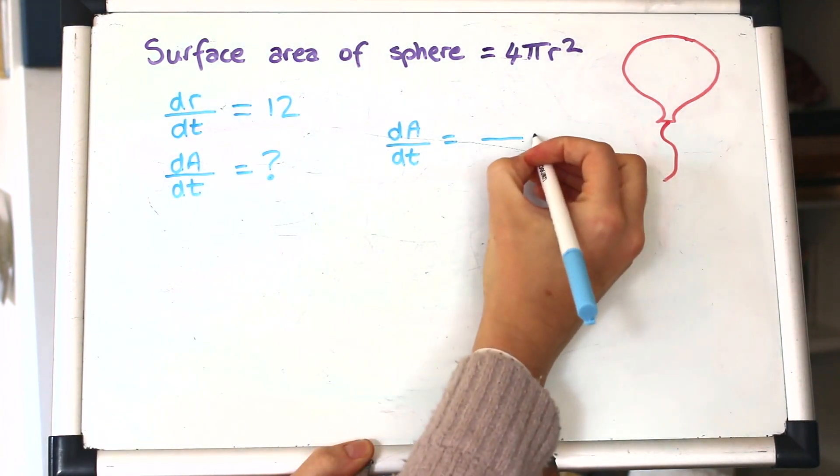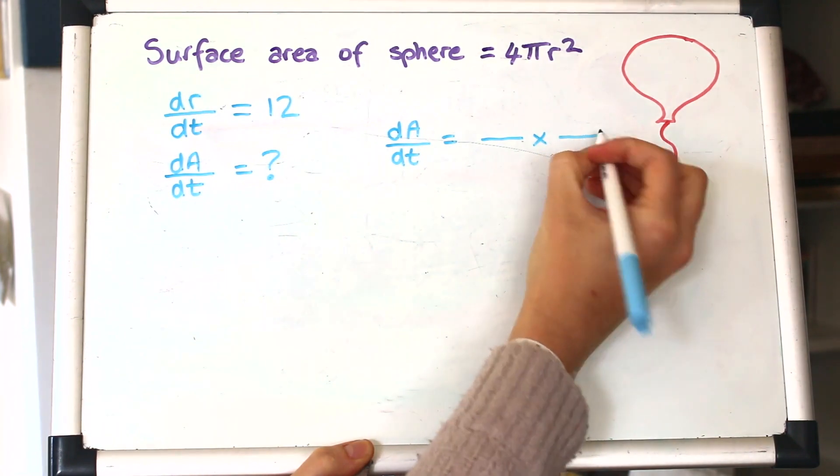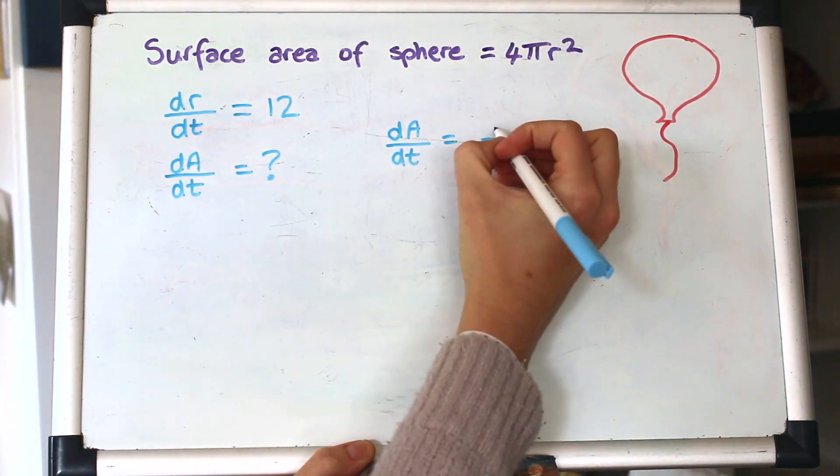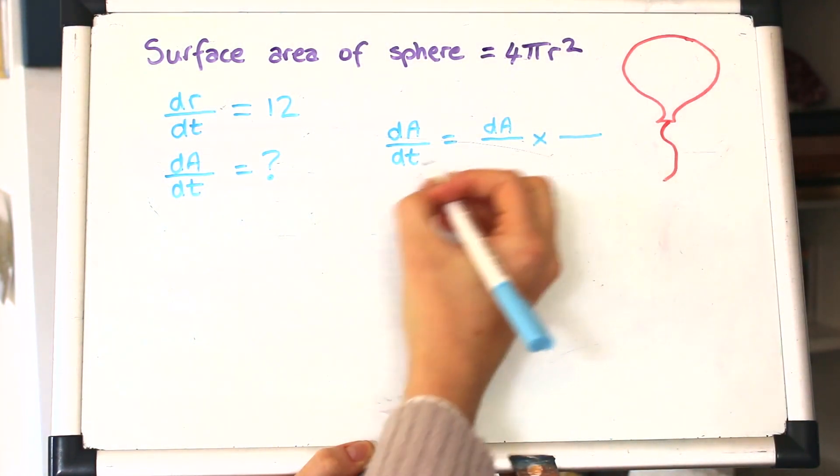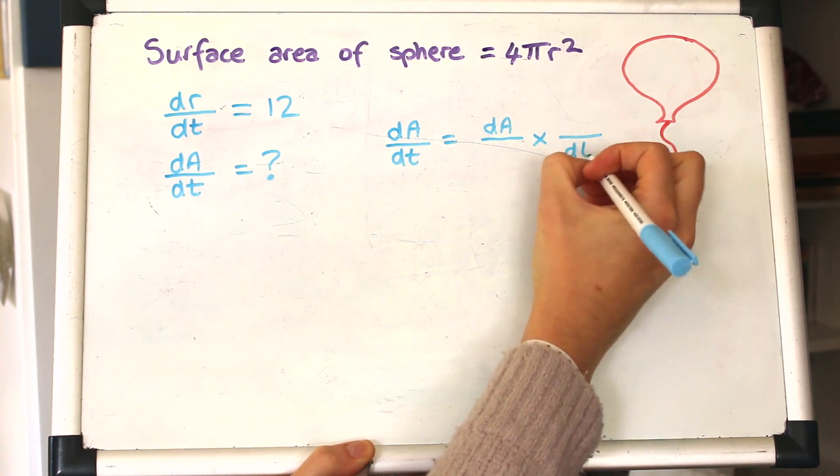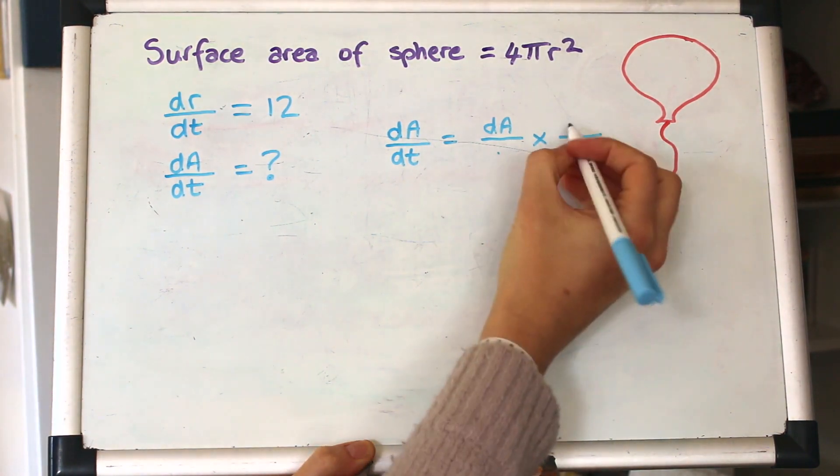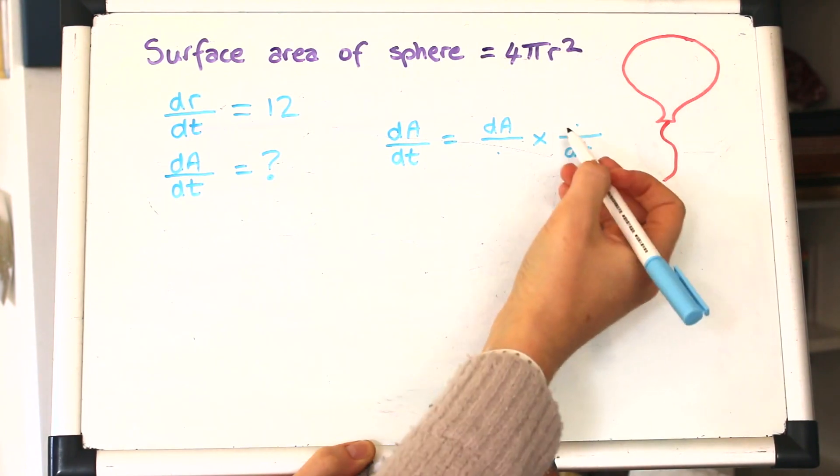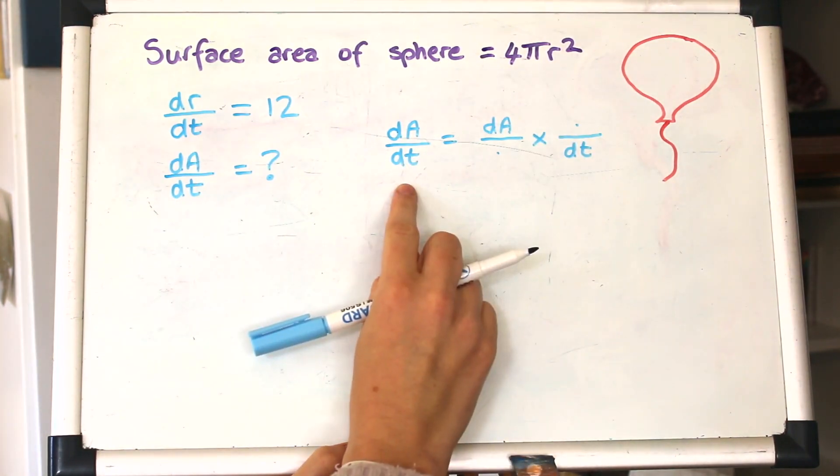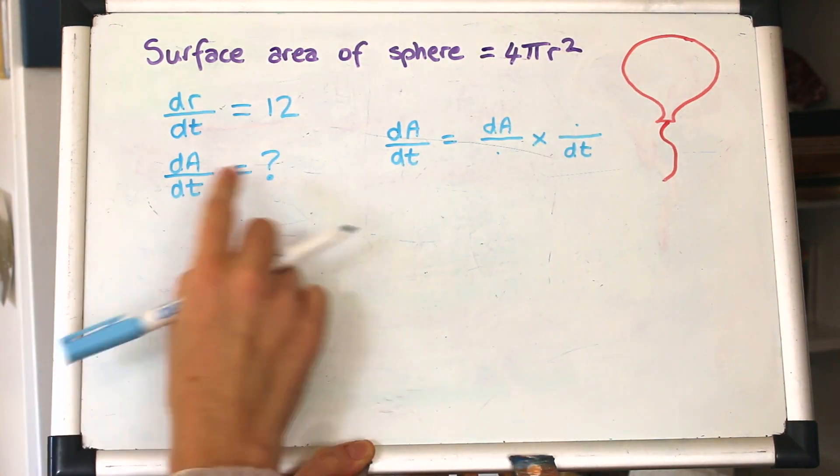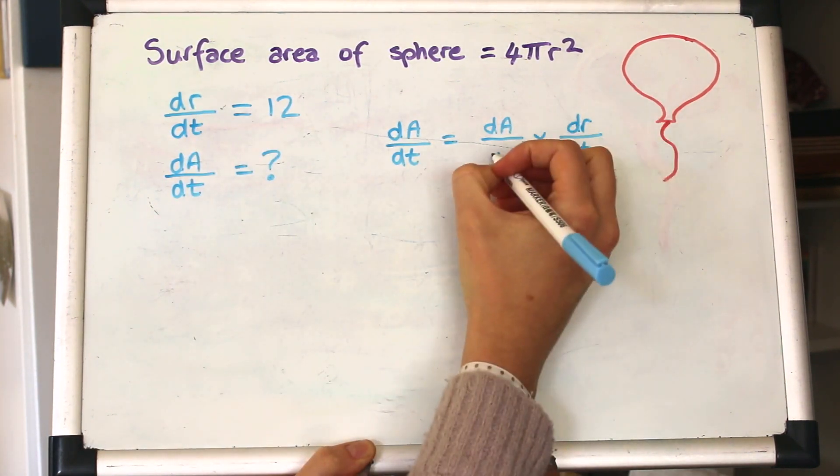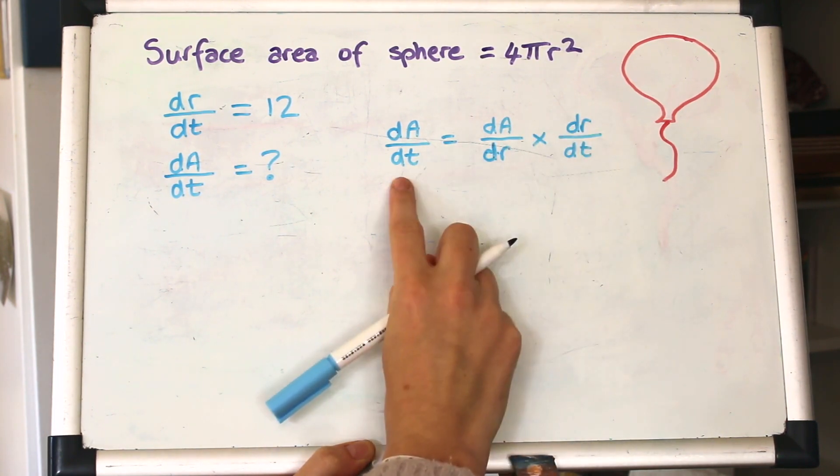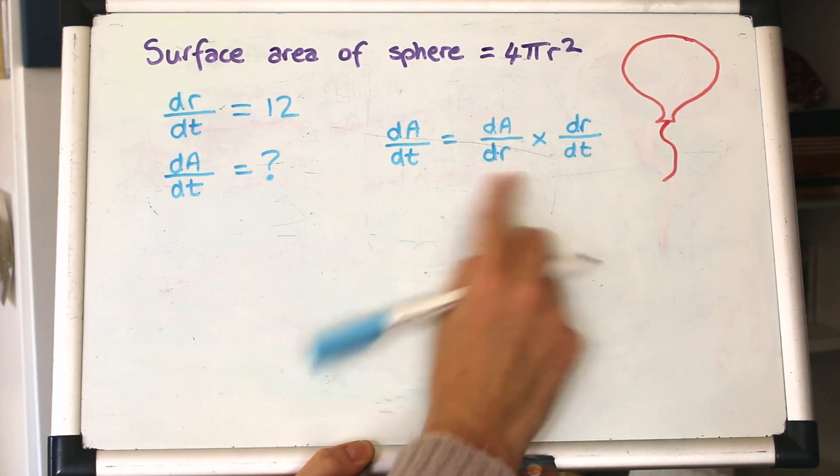So we're asked to find dA by dt and we're given dr by dt. I find the best thing to do here is to set up a little chain rule equation and put what we want on the top of the first derivative and what we want on the bottom of the second one. And then whatever we put here and here needs to be the same so that they cancel out, so that we're left with dA by dt. So what we've got here is dr by dt, so it's going to be dr. Can you see how the dr's would cancel to leave us with that? So that is an equation that works.